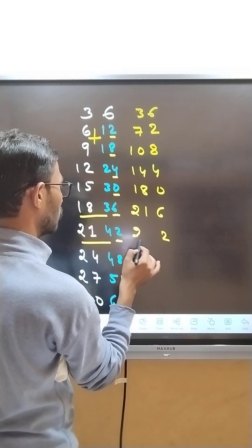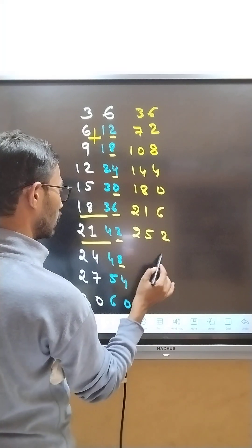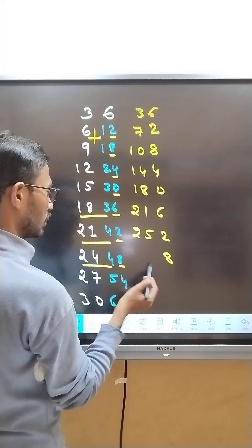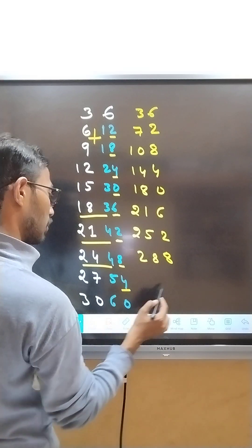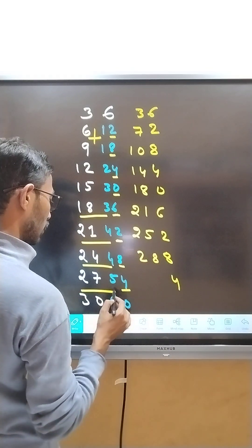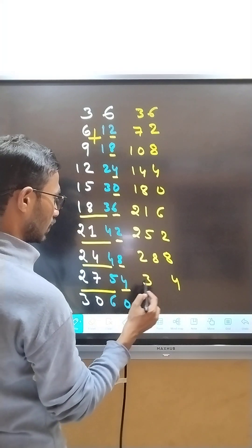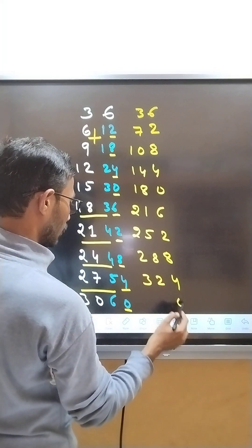21 and 4 is 25, the last number is 8. 24 and 4 is 25. The last number is 4. 25 and 5 is 35, the last number is 0.